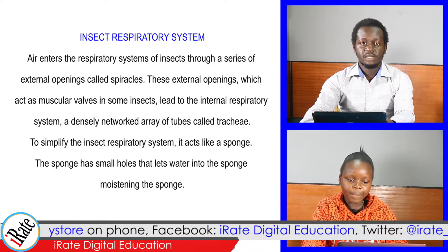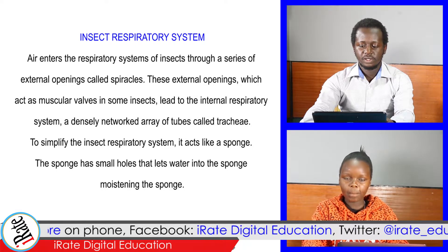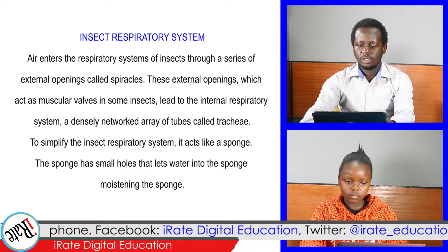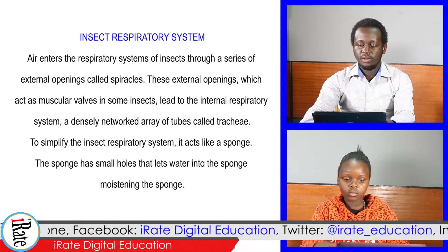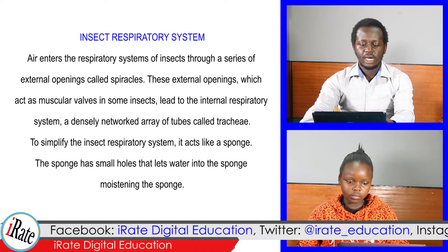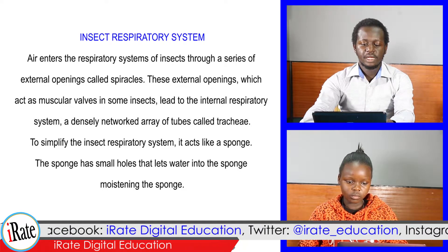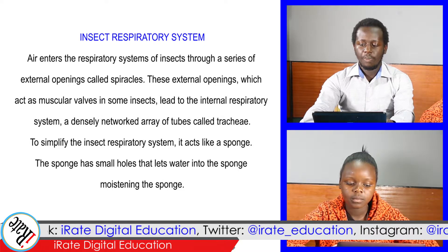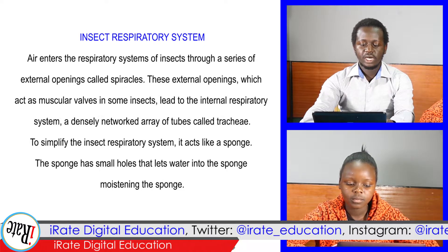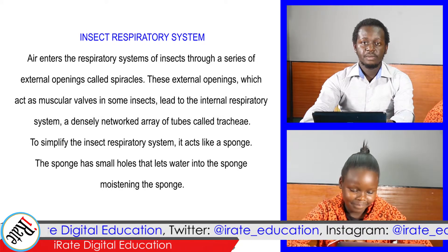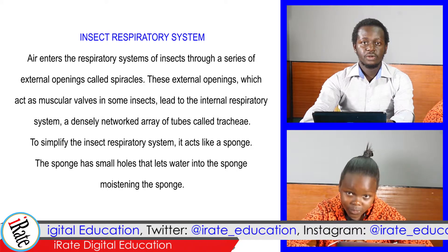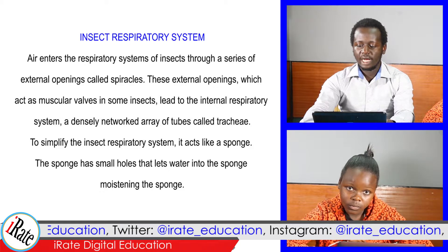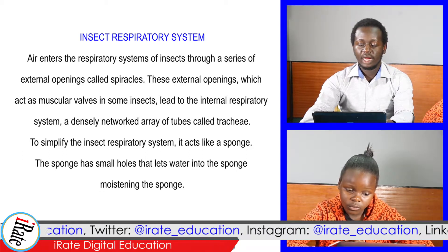Air enters the respiratory system of insects through a series of external openings called spiracles. These external openings, which act as muscular valves in some insects, lead to the internal respiratory system — a densely networked array of tubes called tracheae.